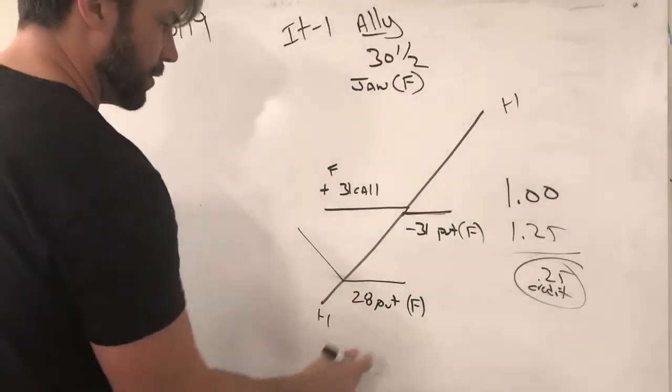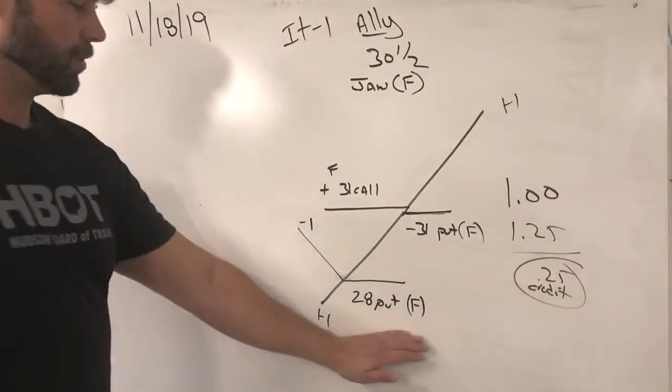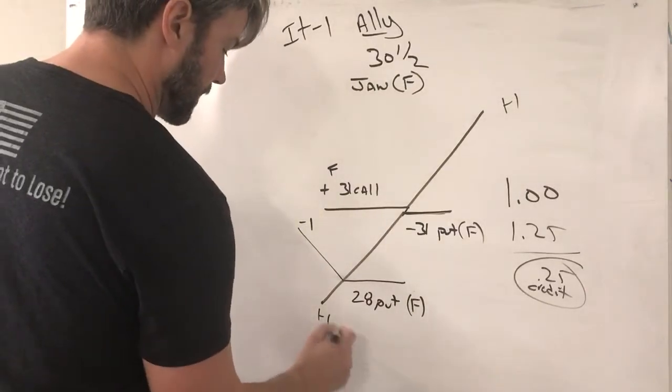So I have a positive one slope from the put I sold on the 31 line. I have a negative one slope from the put that I bought on the twenty-eight line. When I add these slopes up, I get a zero slope.